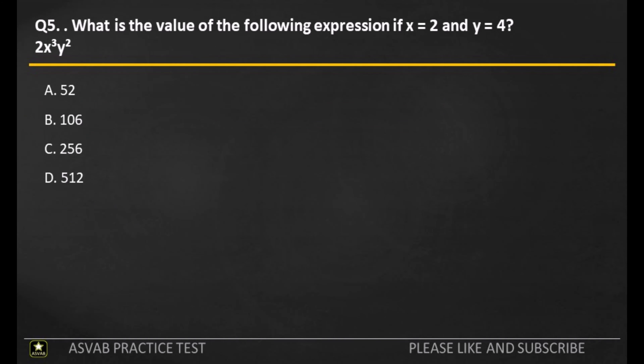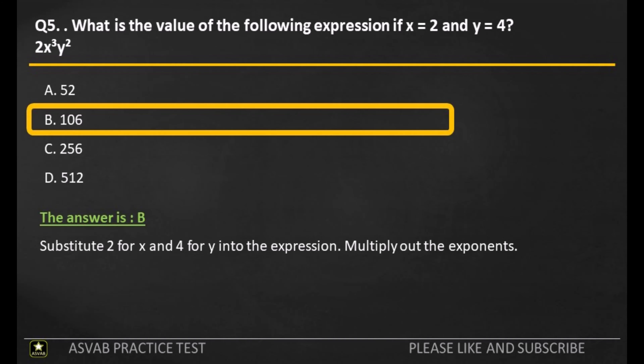Q5. What is the value of the following expression if X equals 2 and Y equals 4? A: 52. B: 106. C: 256. D: 512. The answer is C. Substitute 2 for X and 4 for Y into the expression. Multiply out the exponents.